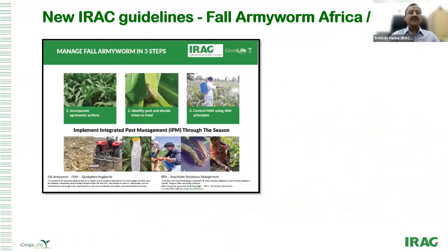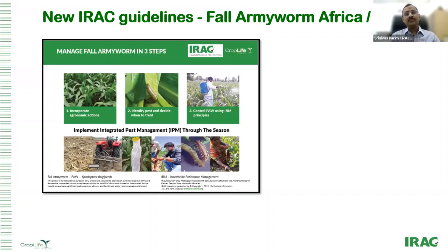IRAC has guidelines developed some time ago, and the IRAC International Lepidopteran Working Group built upon these, coming up with new guidelines to help drive farm-level management of fall armyworm in Asia and Africa. It is done in three steps: one, incorporate agronomic actions; two, identify the pest and decide when to treat; and three, control the insect using IRM principles.